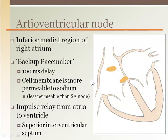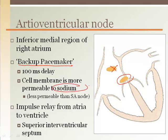In situations where the sinoatrial node may not function properly and does not self-create a new impulse to start a new beat, the atrioventricular node will self-generate a beat — that is its second function. It is the backup pacemaker of the heart. Like the sinoatrial node, it is also leaky to sodium, so it is self-depolarizing. However, the sodium leak is much slower than the sinoatrial node, so it takes longer to generate an action potential. Under normal circumstances, the sinoatrial node's impulse will arrive and stimulate the atrioventricular node before it has a chance to self-generate one.